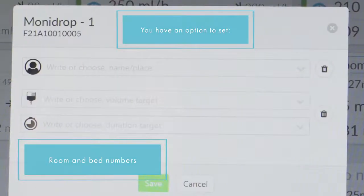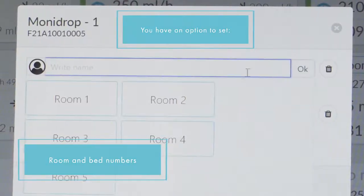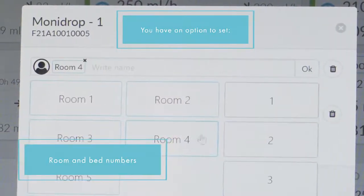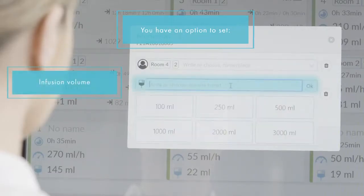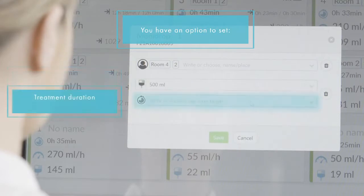On the IV screen, each device can be assigned to a room location and to a patient's bed number. There is an option to set the target values for the fluid volume to be infused and the treatment duration.